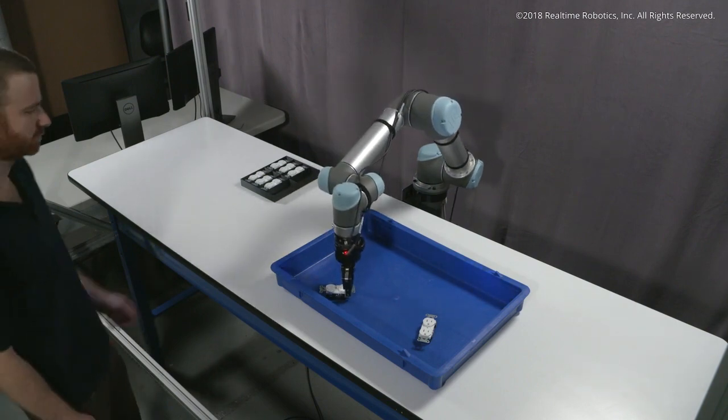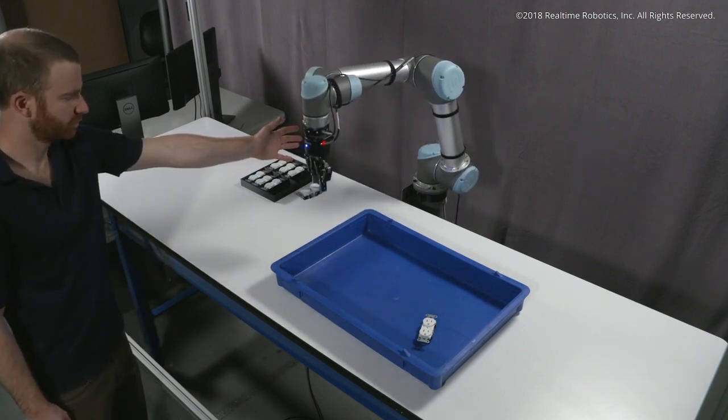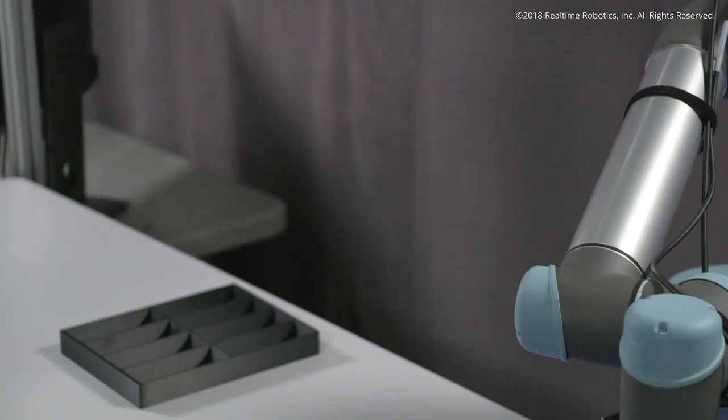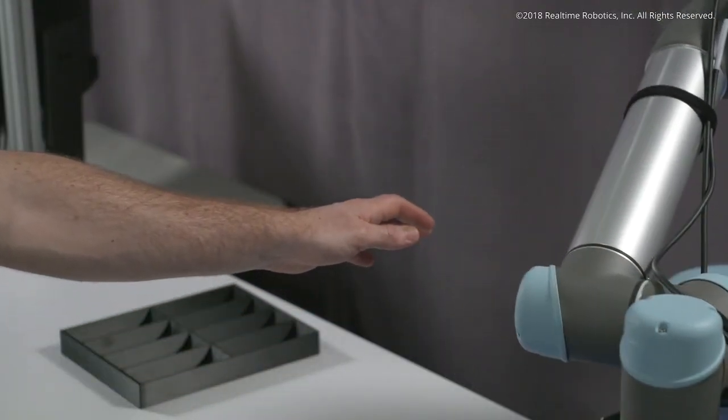As the robot executes a path, the processor continuously validates that the current trajectory is still safe, based on live streaming sensor data.